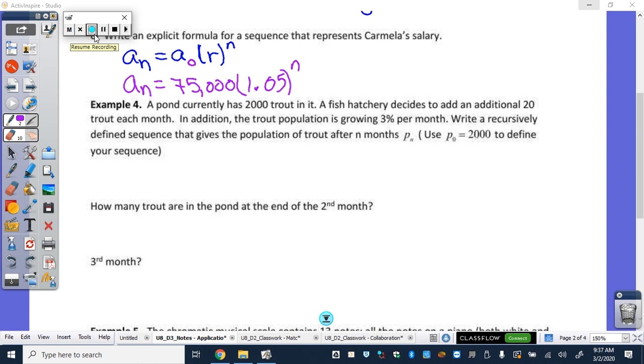So a pond currently has 2,000 trout in it. A fish hatchery decides to add an additional 20 trout each month. In addition, the trout population is growing by 3% per month. Write a recursively defined sequence that gives the population of trout after n months. And use p sub 0 equals 2,000 to define your sequence. So, we were told to start with that, so p sub 0 equals 2,000, that is our starting point. Now, is this one arithmetic or geometric? But there's also a percentage. So this is neither. Because it's adding and you're increasing by 3% each month. Because it's not both. It can't be both.